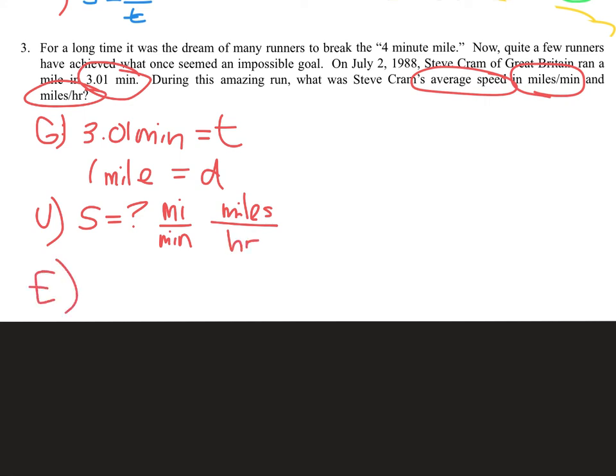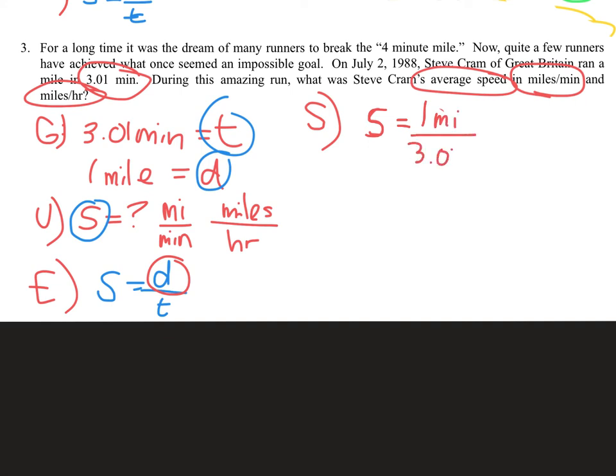Let's take a look at what equation I can use to solve that. I'm looking for speed, I've got distance and time, so I'm going to use my speed equation: speed equals distance divided by time. Let's move on to substitute. I don't have speed so I'm going to leave that variable. But on top is distance, which is one mile, and 3.01 minutes on the bottom. S stands for solve. I'm going to take one mile divided by 3.01 minutes, and when I do that I get about 0.33 miles per minute. That is one of the answers that I needed in miles per minute.